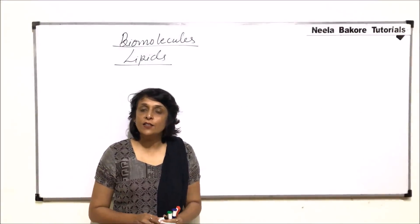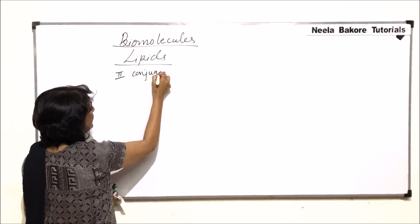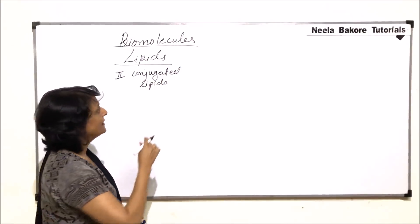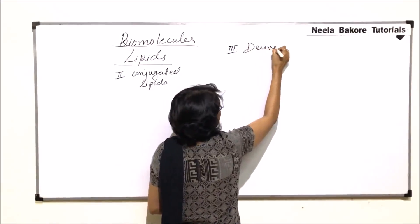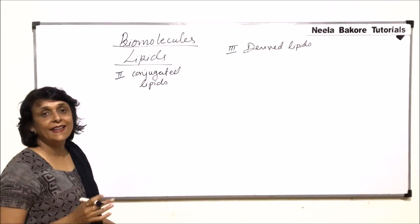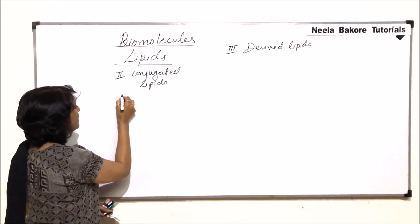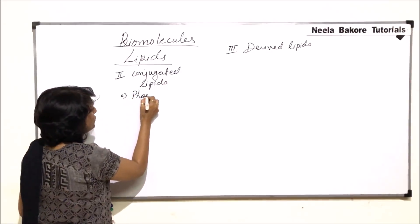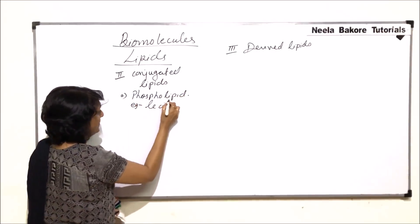In this section we'll talk about the other two categories of lipids. The second category is conjugated lipids, in which along with the lipid there is something else attached to it. The third category, which is also very important, is called derived lipids. In conjugated lipids, depending upon what that something else is, the name is given. For example, if there is a phosphoric acid or phosphate group attached, we call it a phospholipid. One example of a phospholipid is lecithin.